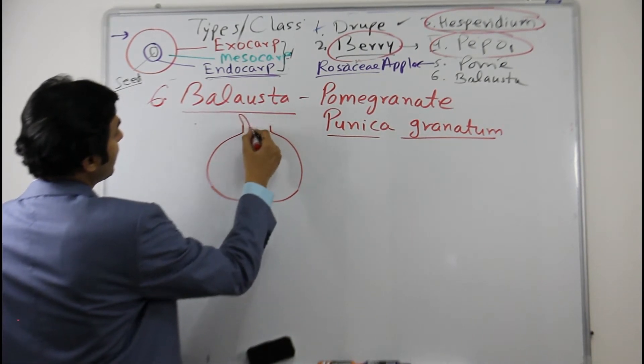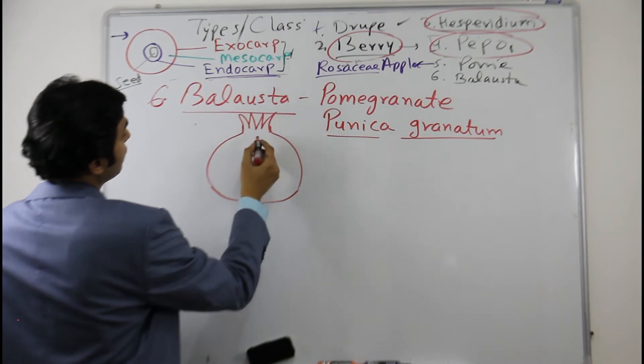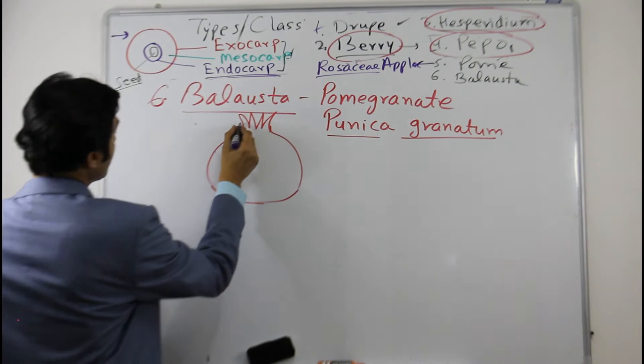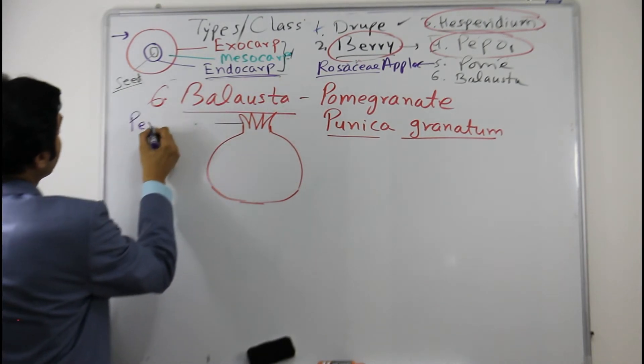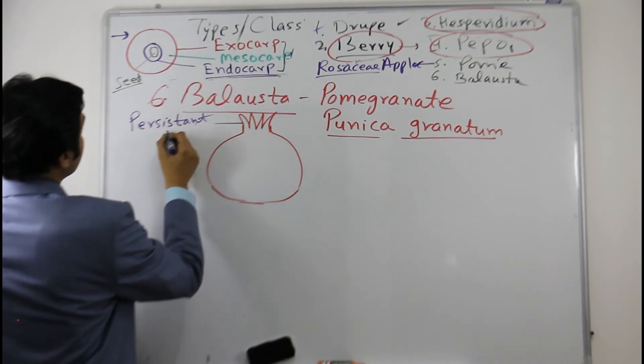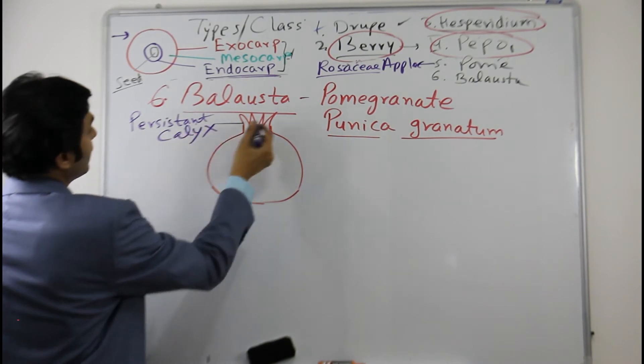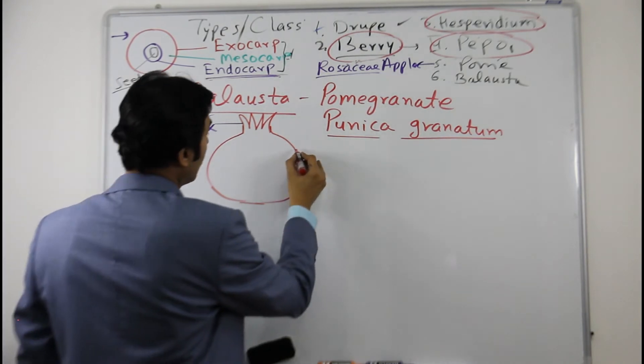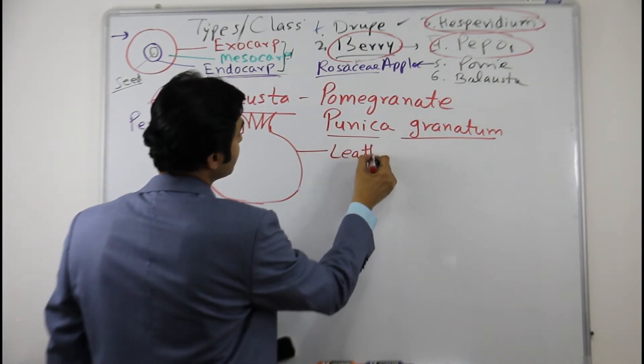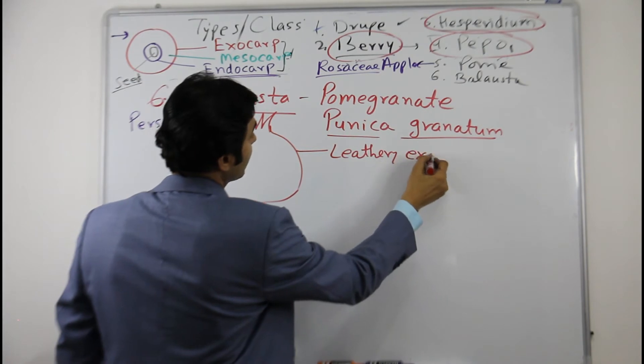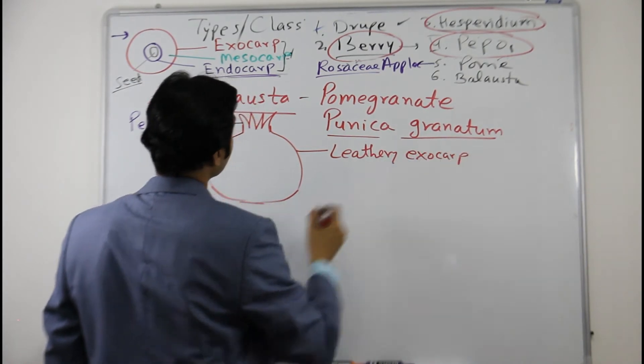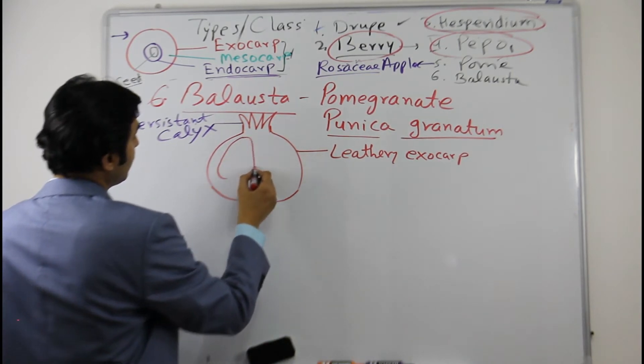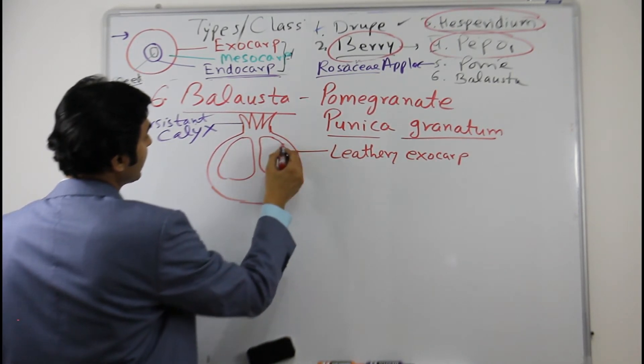This has a characteristic feature which is this persistent calyx. Now inside this, the outer cover exocarp is leathery, so it has leathery exocarp in the pomegranate. And if you see the sectors, it has various sectors.